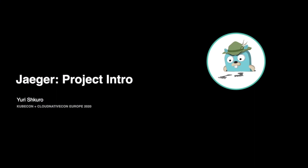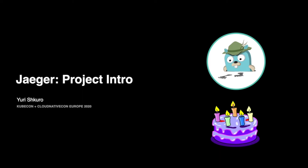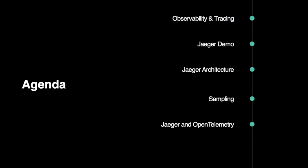Hello and welcome to a project introduction for Jäger. My name is Juri Shkro. This month is the fifth anniversary of Jäger starting from the first commit, which is in August. As for the agenda, I will start with a brief introduction of why tracing is an important part of observability for your systems. I will do a short live demo of Jäger features, talk about Jäger architecture, sampling, and finish with discussion about the relationship between Jäger and OpenTelemetry and how these two projects are collaborating.